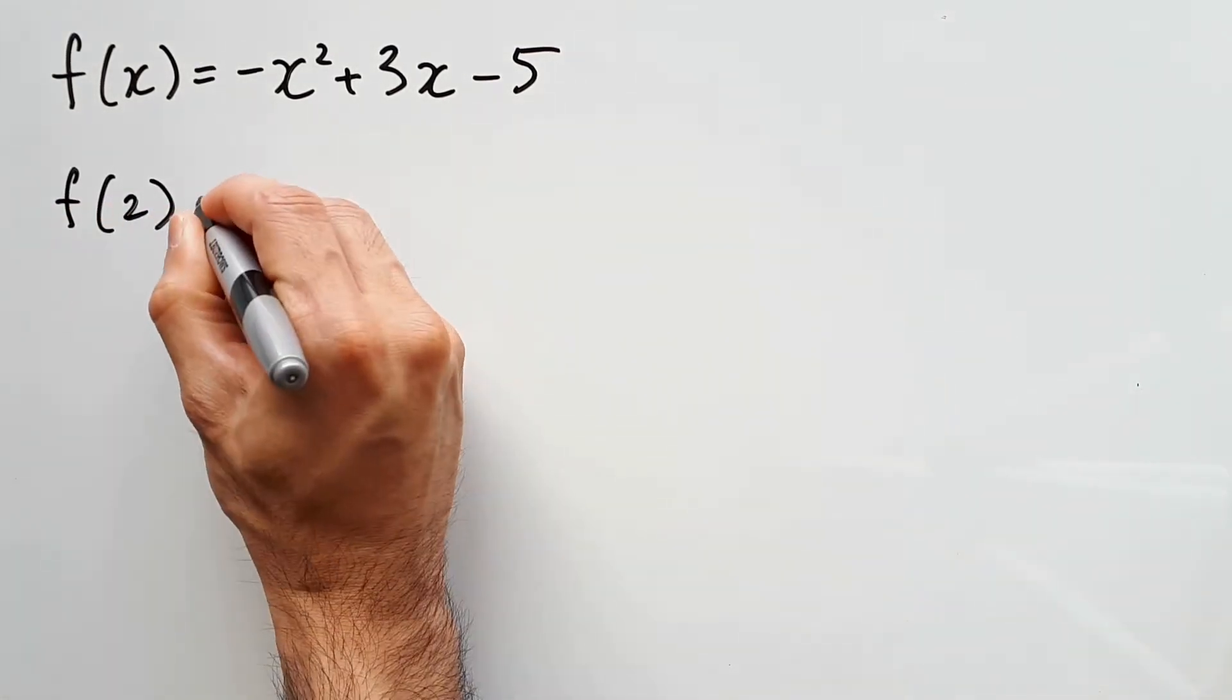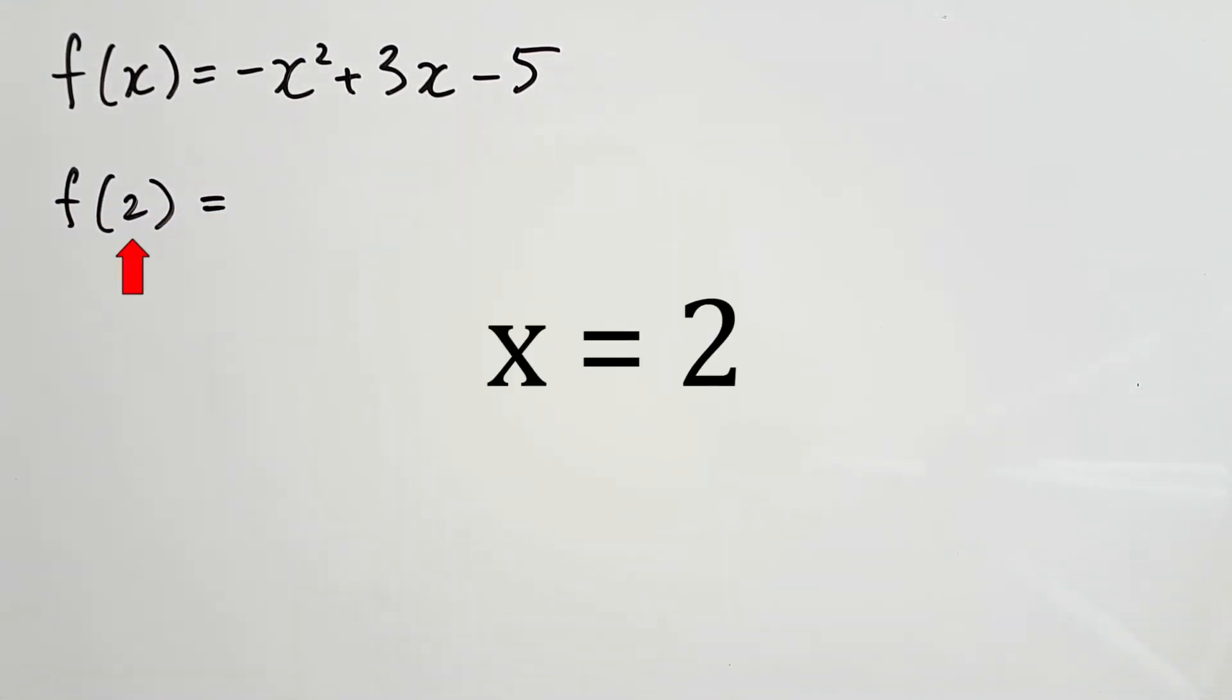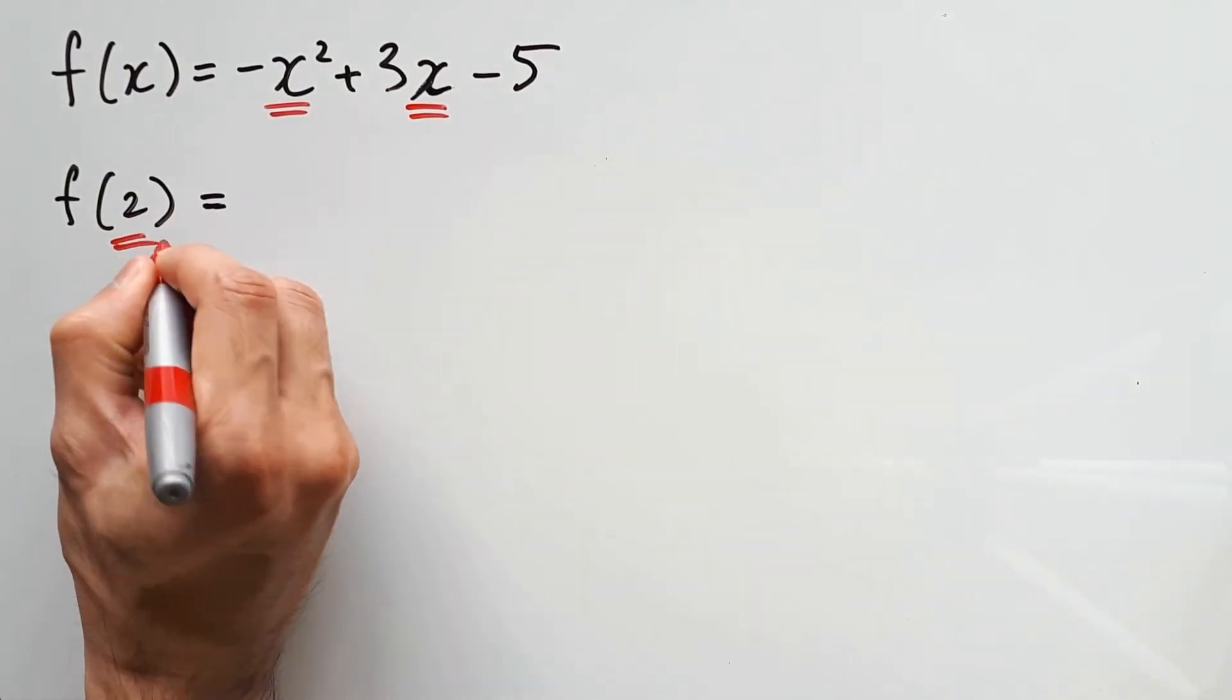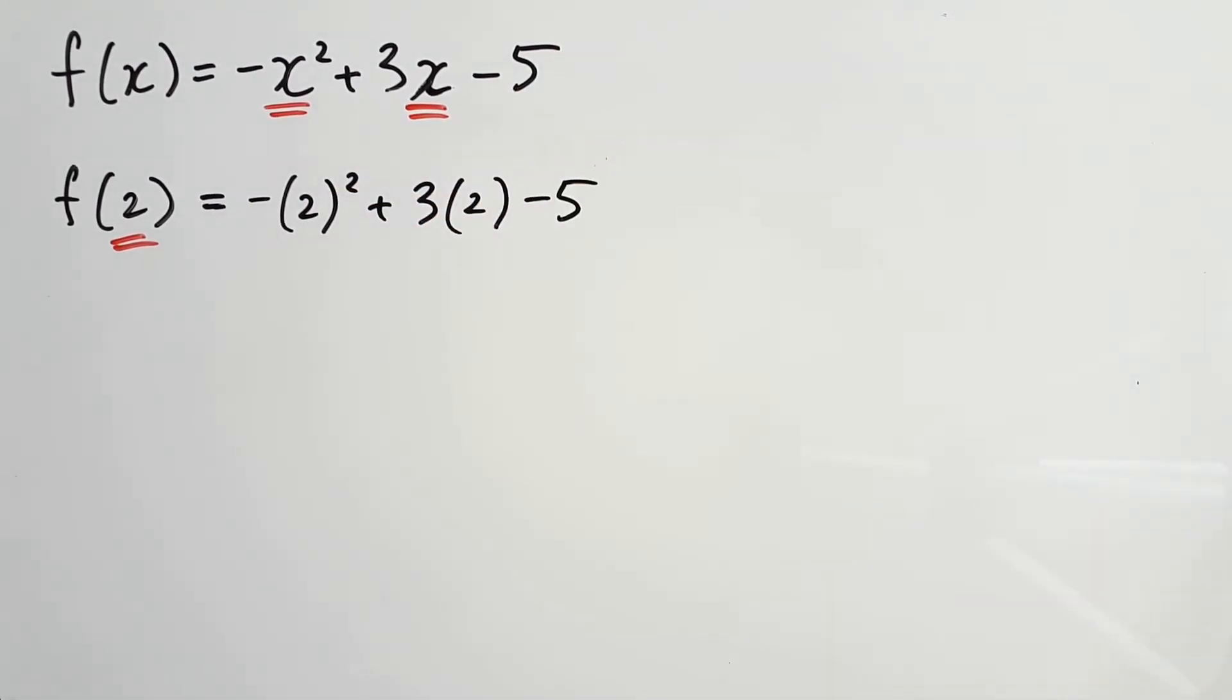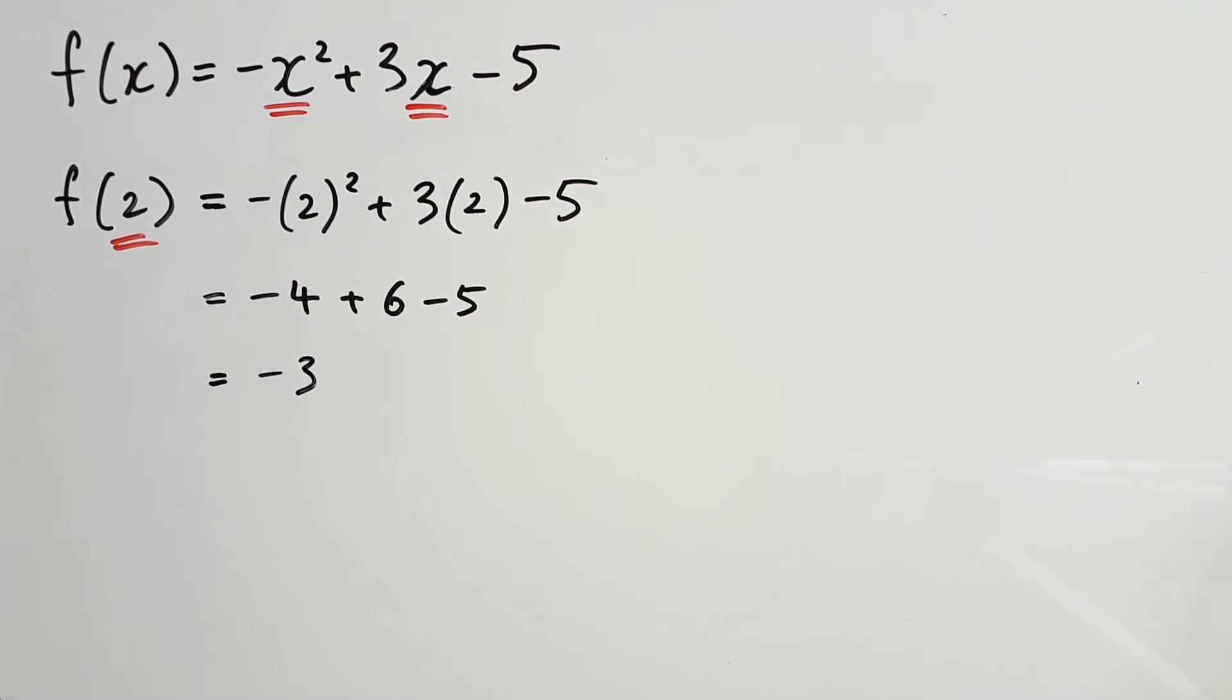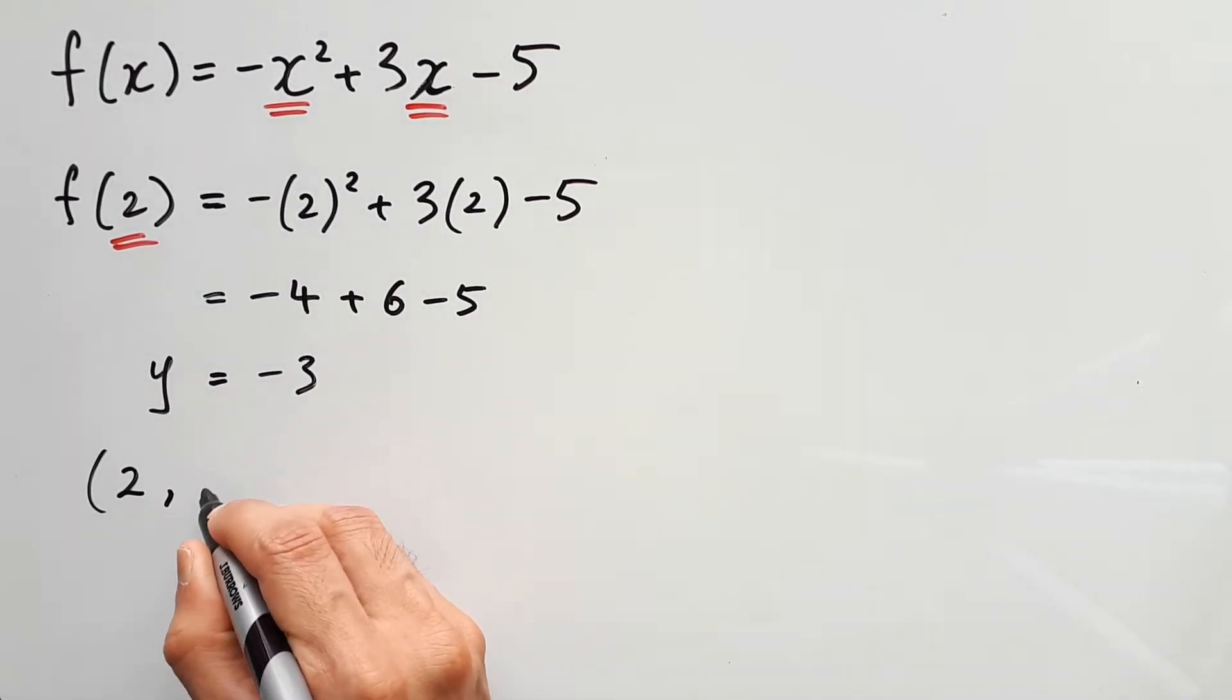So first up we have f of 2. The 2 is saying that x is currently equal to 2. So what you want to do is replace all the x's in your rule with 2. When you do all the operations and calculations for this, we will find that the result is negative 3. This is known as a y value, which means when x is 2, y is negative 3, which means we have a coordinate.